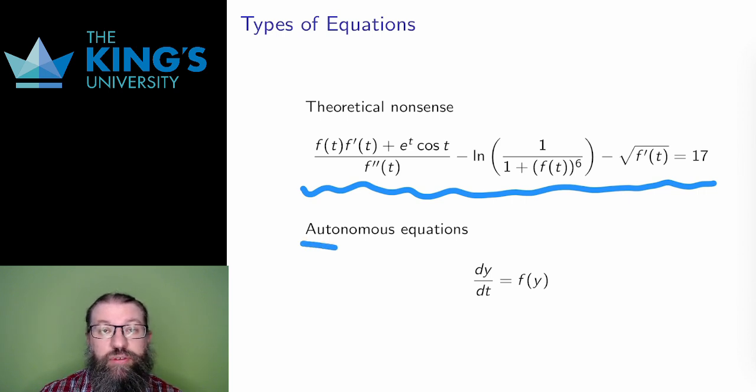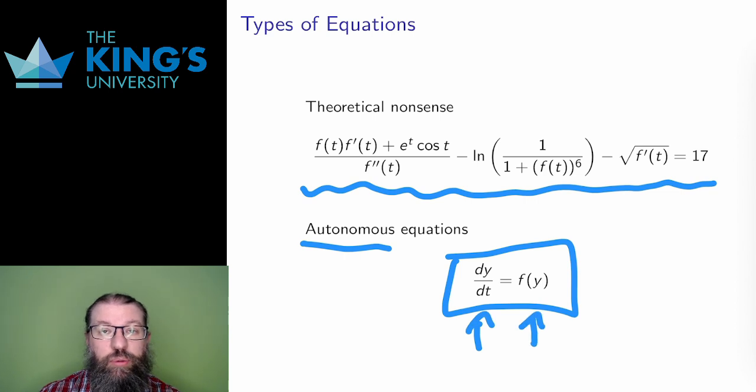An autonomous first-order ODE is an equation of this form. The first derivative is isolated on the right, and the left is some expression in the dependent variable y. The independent variable never shows up on the right.